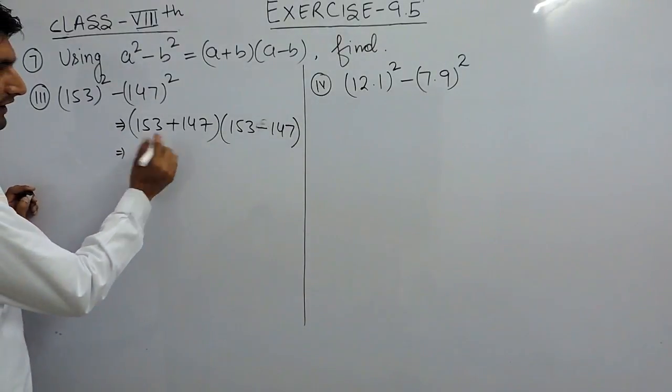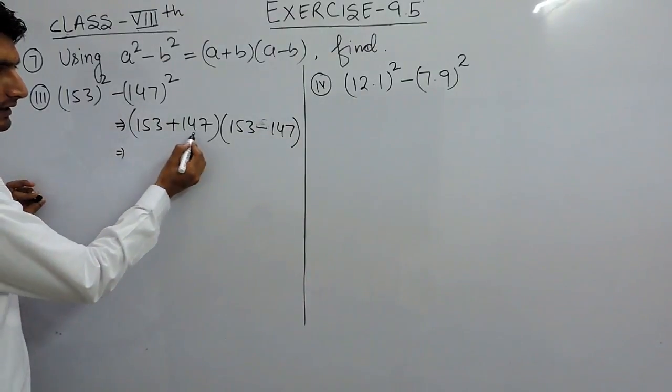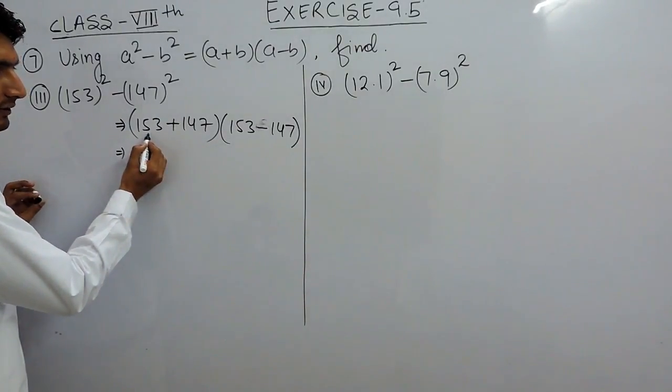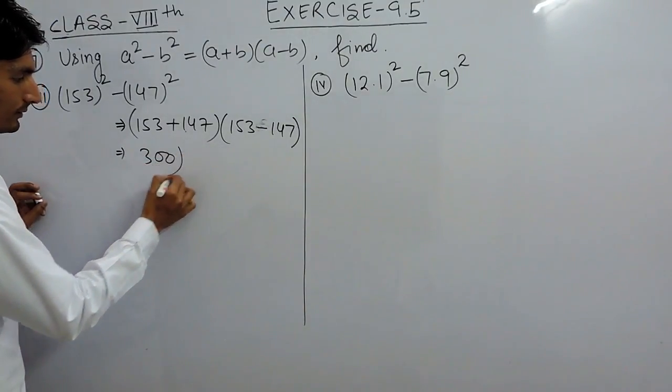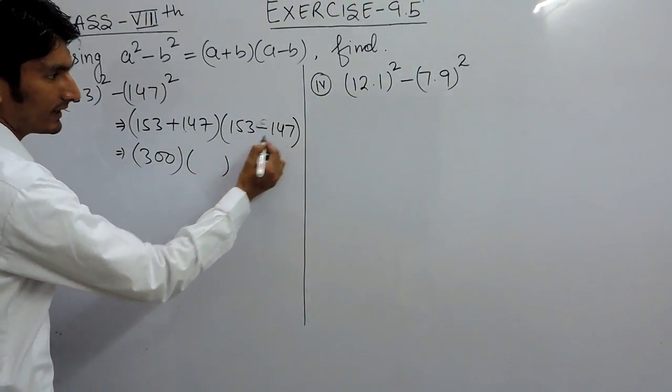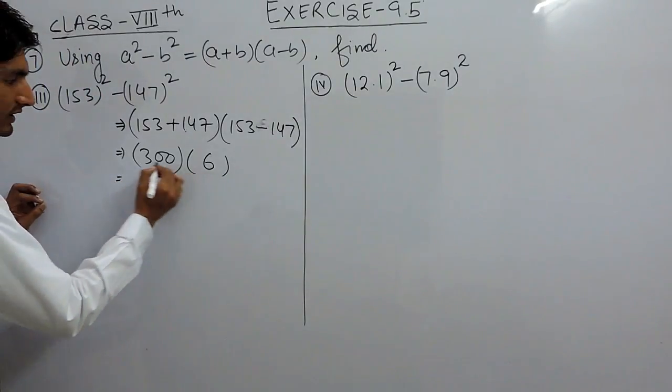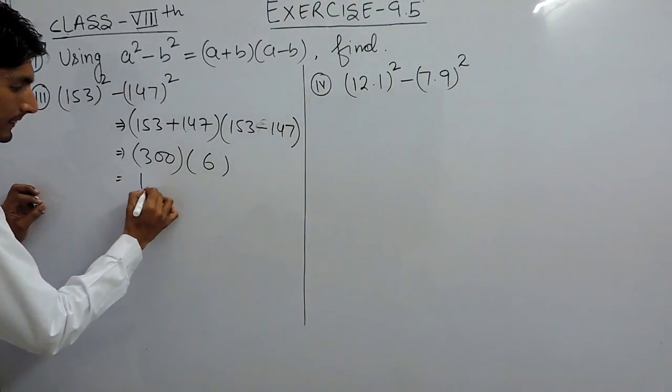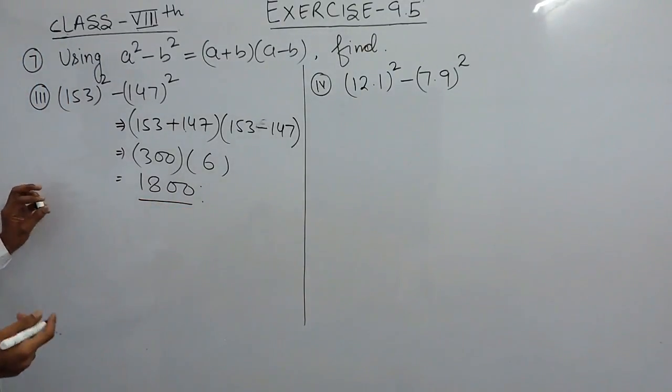If I add 7 to this, this will be 160. Then we can add 40, this will be 200. And now this is 100, so this will become 300. Multiplied with 153 minus 147, which is 6. So 6 times 3 is 18, so this will become 1800. 1800 should be the answer.